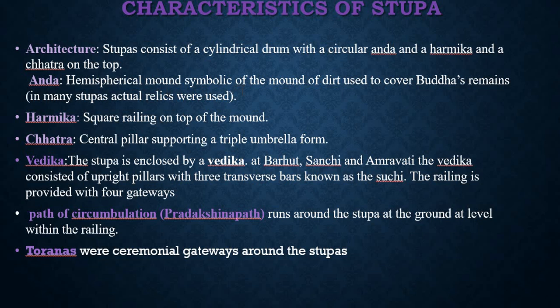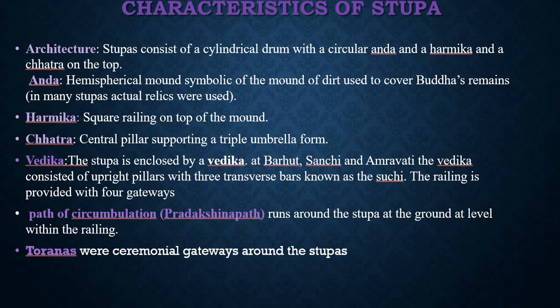The characteristics of a Stupa: the architecture consists of a cylindrical drum with a circular base, a hemispherical mound (Anda), and a Chakra on the top. The hemispherical mound is symbolic of the mound of dirt used to cover Buddha's remains; in many Stupas actual relics were used. Second is the Harmika — an important feature — a square railing on top of the mound. Third is the Chhatra — a central pillar supporting a triple umbrella form. The Stupa is enclosed by a Vedika (railing) at Bharut, Sanchi, and Amravati, consisting of upright pillars with three transverse bars known as Suchi, and four gateways.